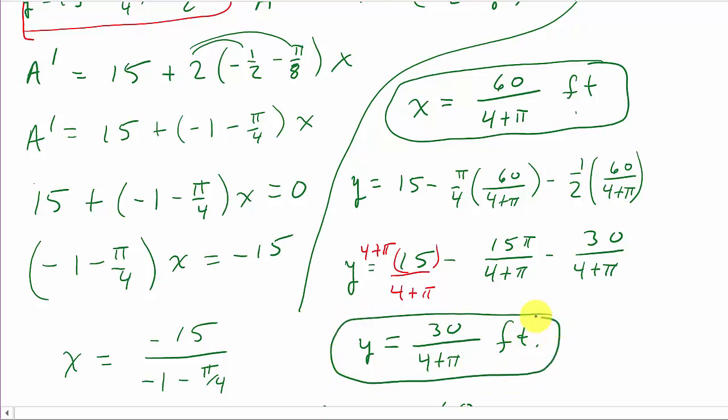So there's your X and there's your Y — the dimensions that maximize the light admitted. X equals 60 over (4 plus π) feet and Y equals 30 over (4 plus π) feet. Hope it helped — give a like, share, and subscribe. Thanks for watching.